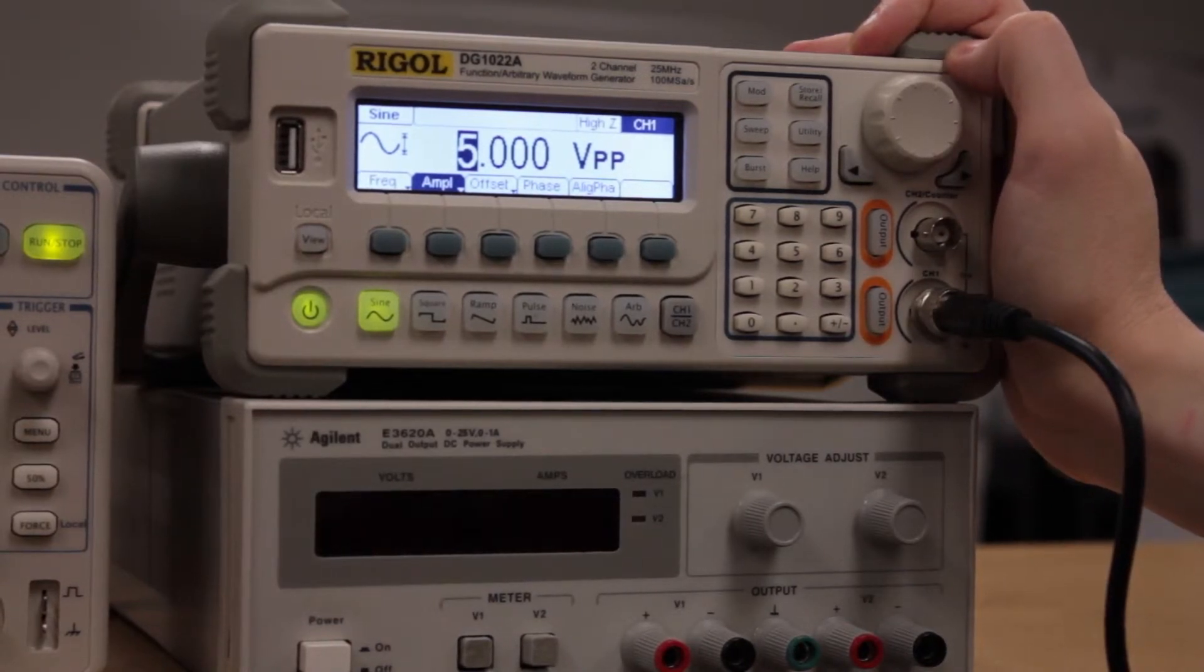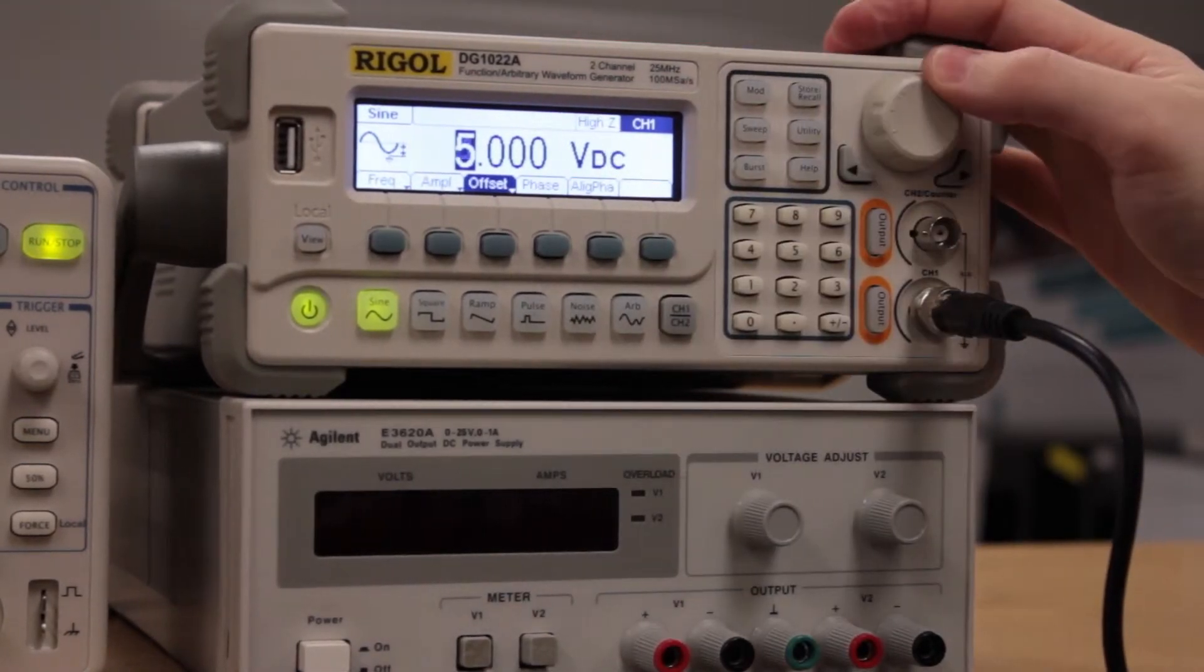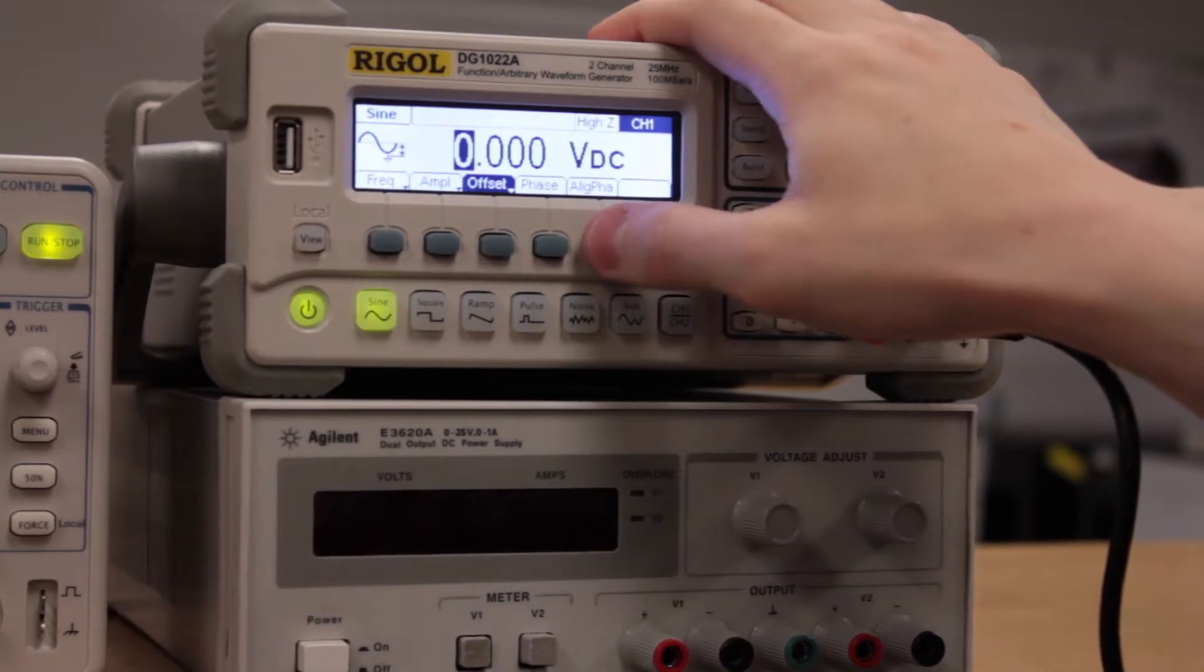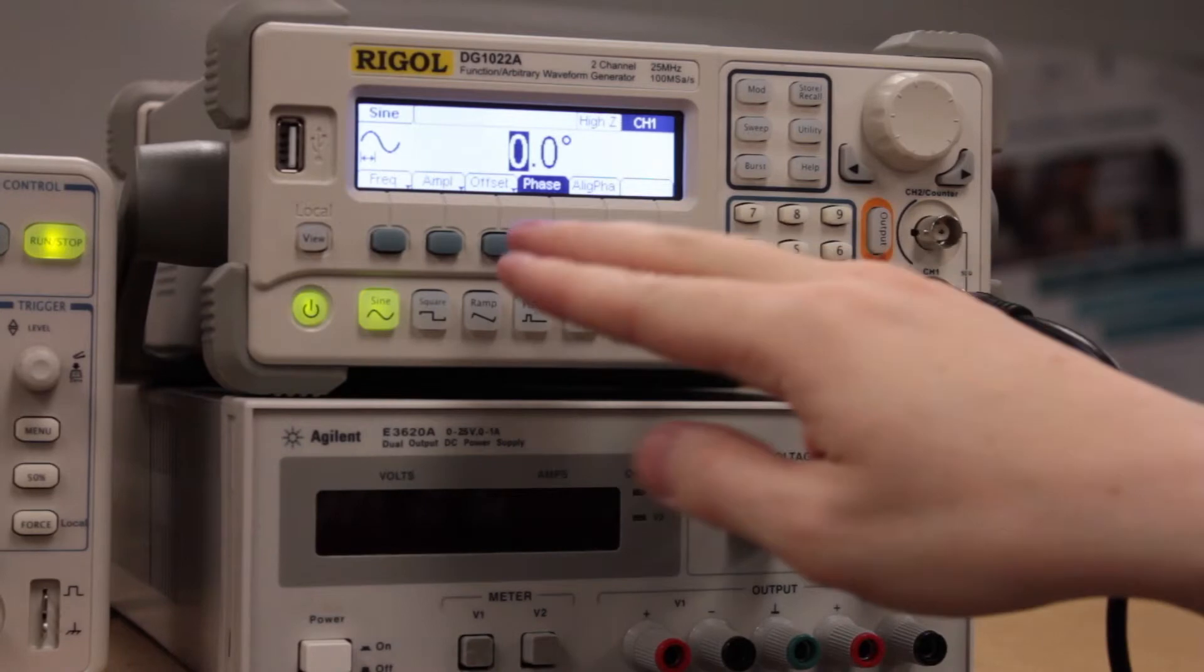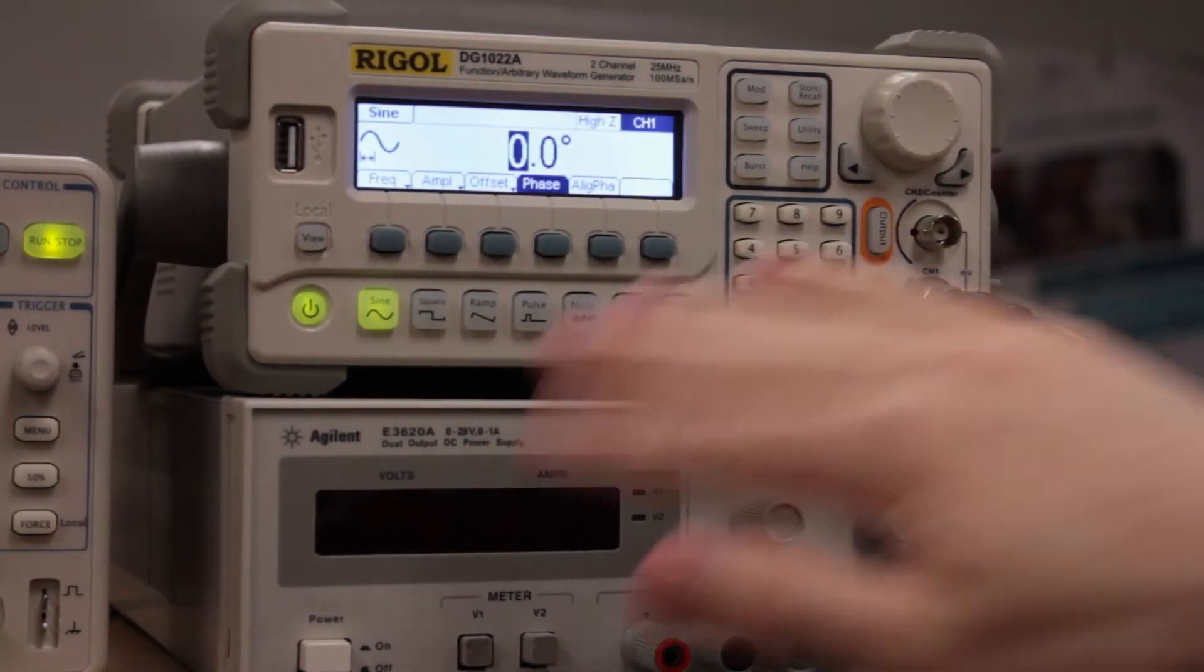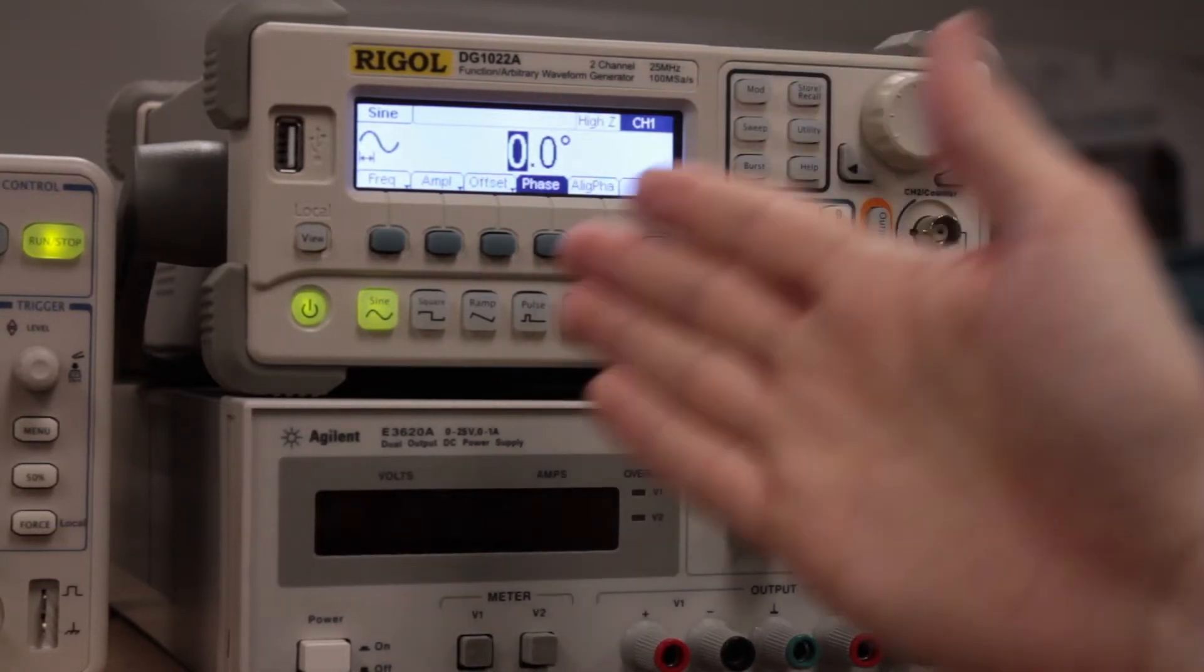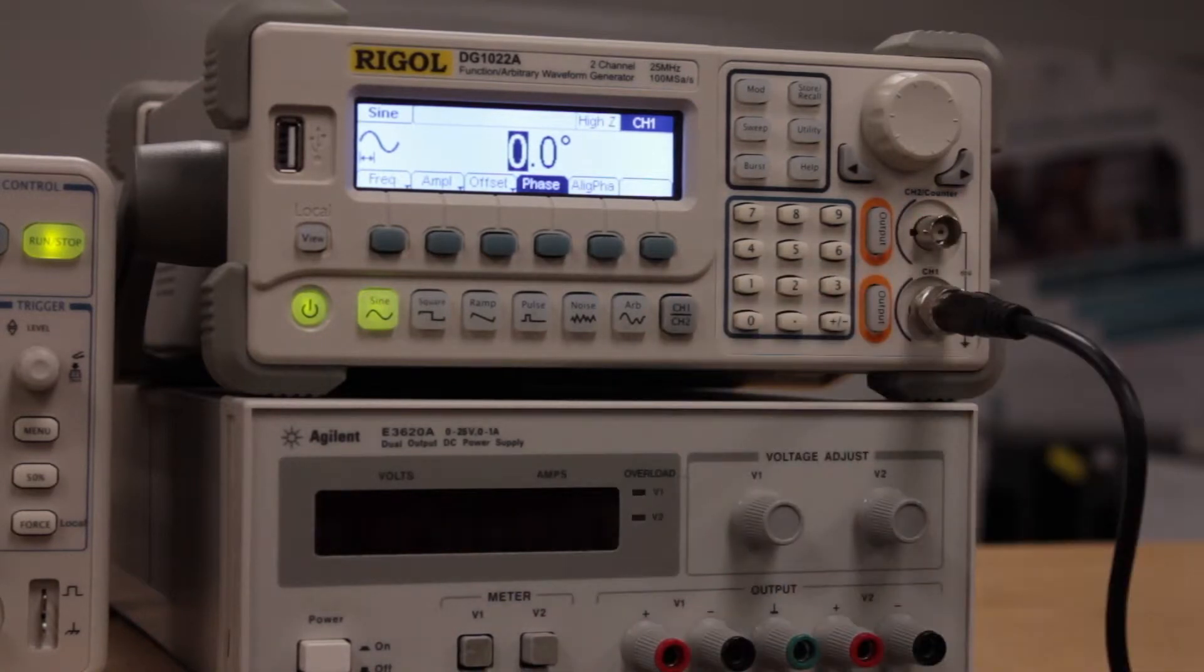There's different options here as well that appear depending on the waveform. So for the sine wave, we can actually depict where it actually starts when we're sending the waveform, and this is just the position of the waveform. It really won't make much of a difference after the first cycle, and we won't really be using that in the course.